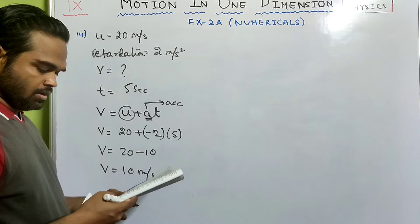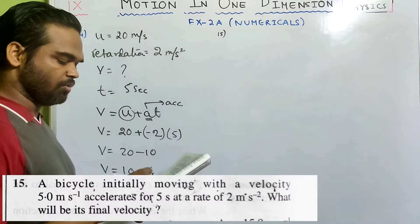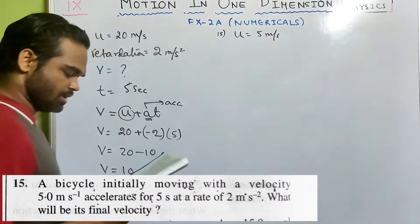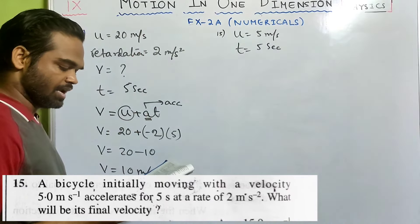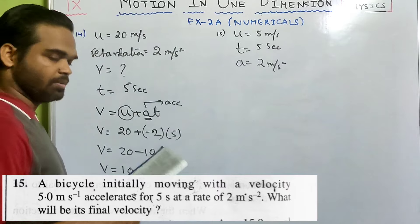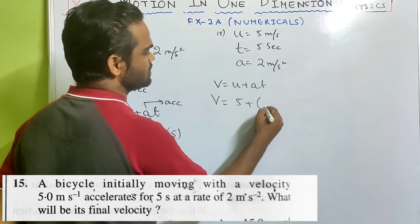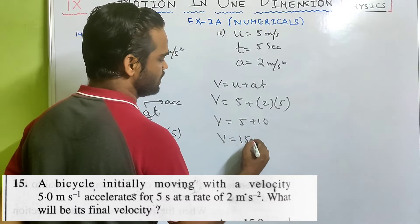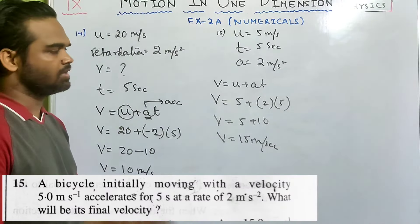Sum 15: a bicycle initially moving at 5 m/s accelerates for 5 seconds at 2 m/s². Using v = u + at: v = 5 + (2 × 5) = 5 + 10 = 15 meter per second.